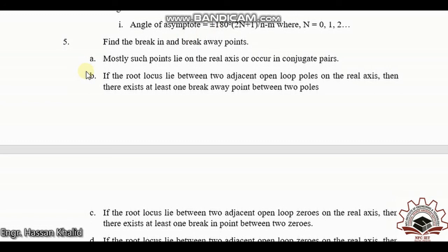In the fifth rule, find the break-in and break-away points. Such points mostly lie on the real axis or occur in conjugate pairs. If the root locus lies between two adjacent open loop poles on the real axis, there exists at least one break-away point between them. If the root locus lies between two adjacent open loop zeros on the real axis, there exists at least one break-in point between those zeros.